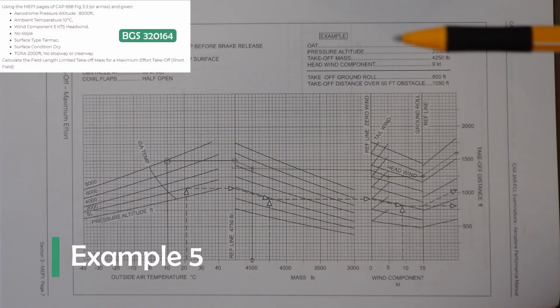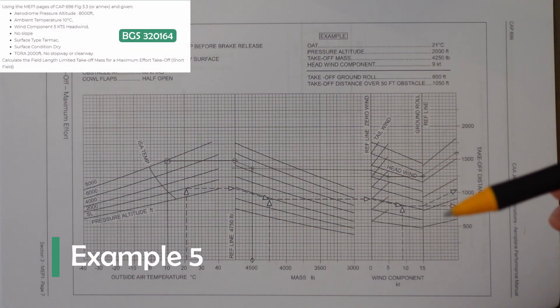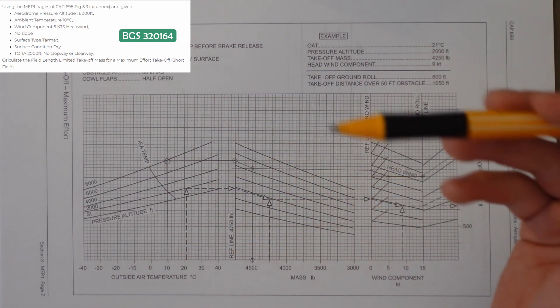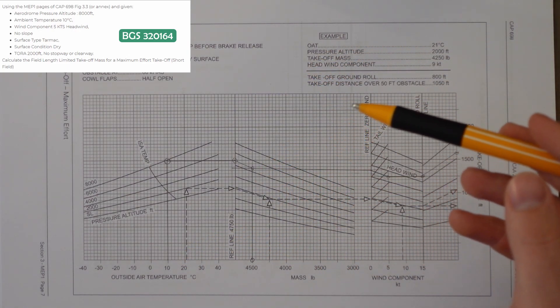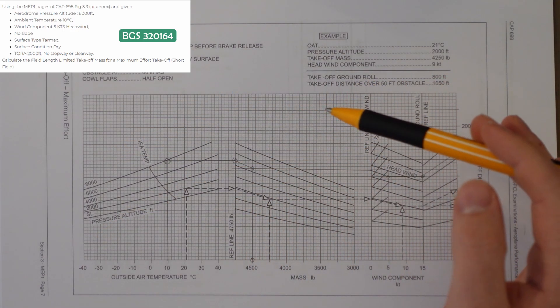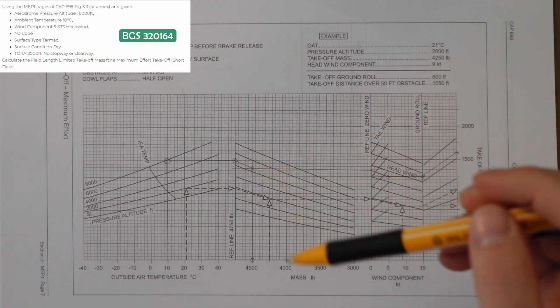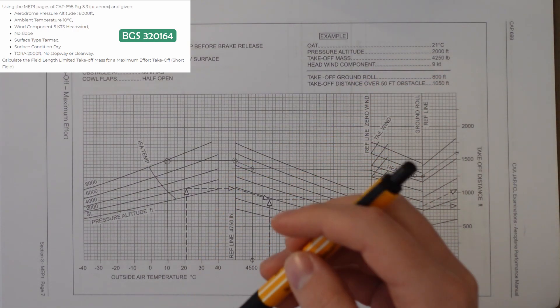In this question we're calculating the field length limiting takeoff mass with the following information. Pressure altitude is 8,000 feet, temperature 10 degrees, five knots of headwind. There's no slope, it's dry tarmac, and the takeoff run available is 2,000 feet. But there is no stopway or clearway.